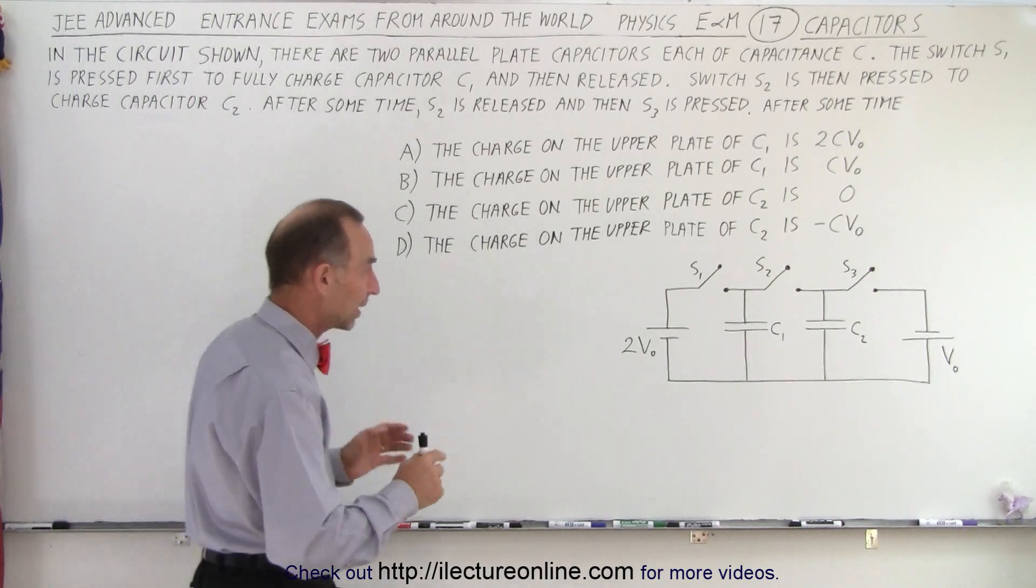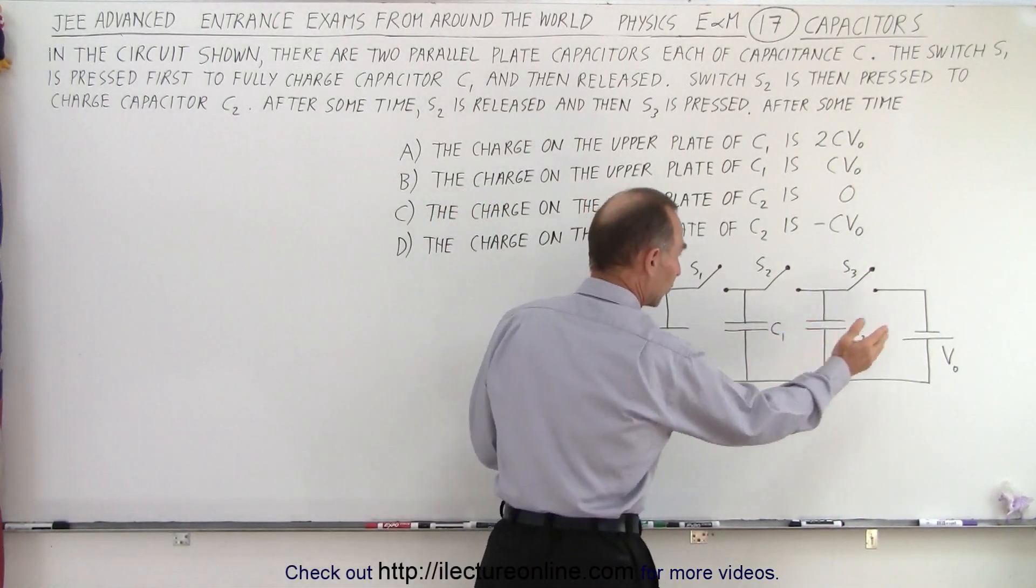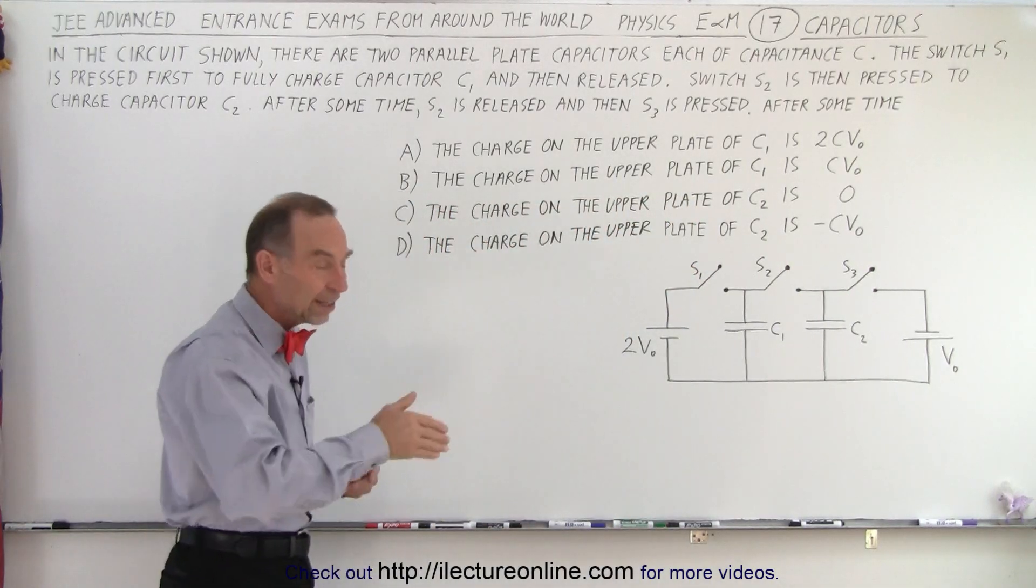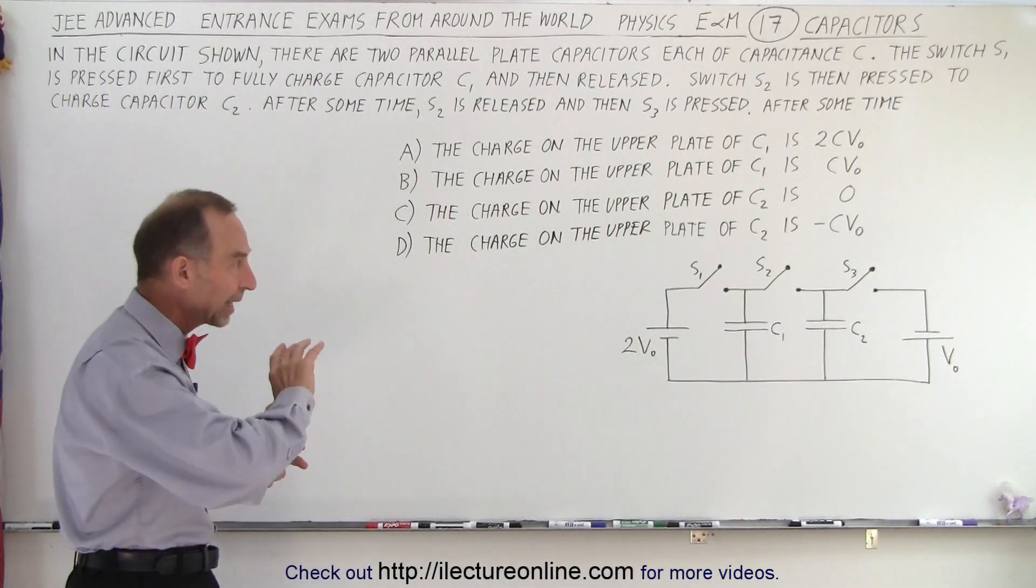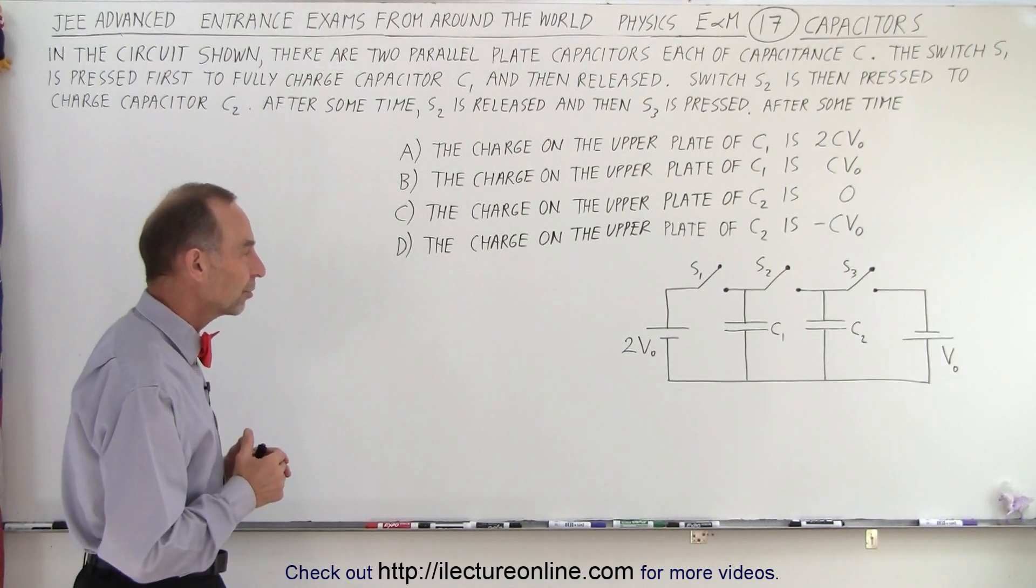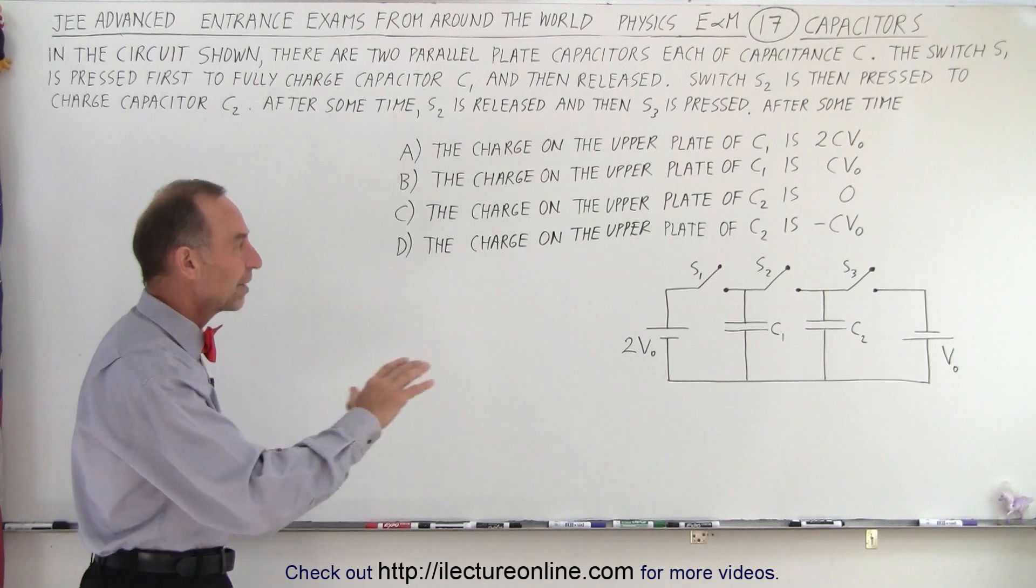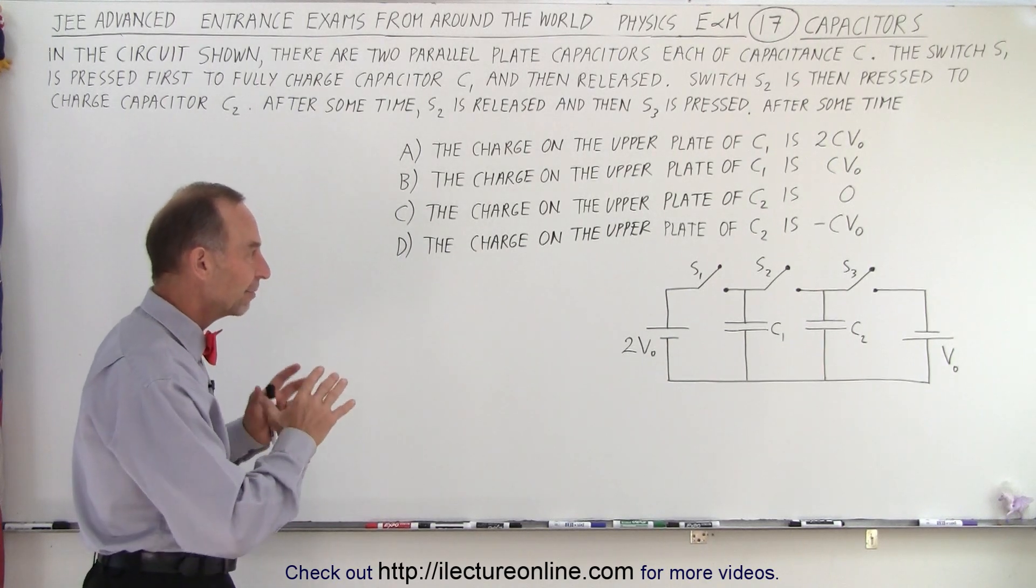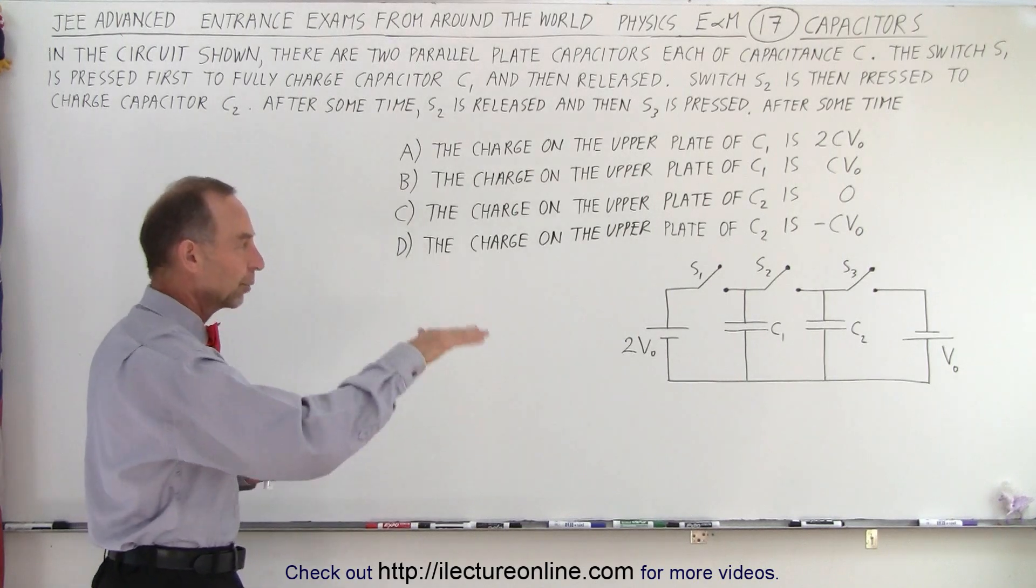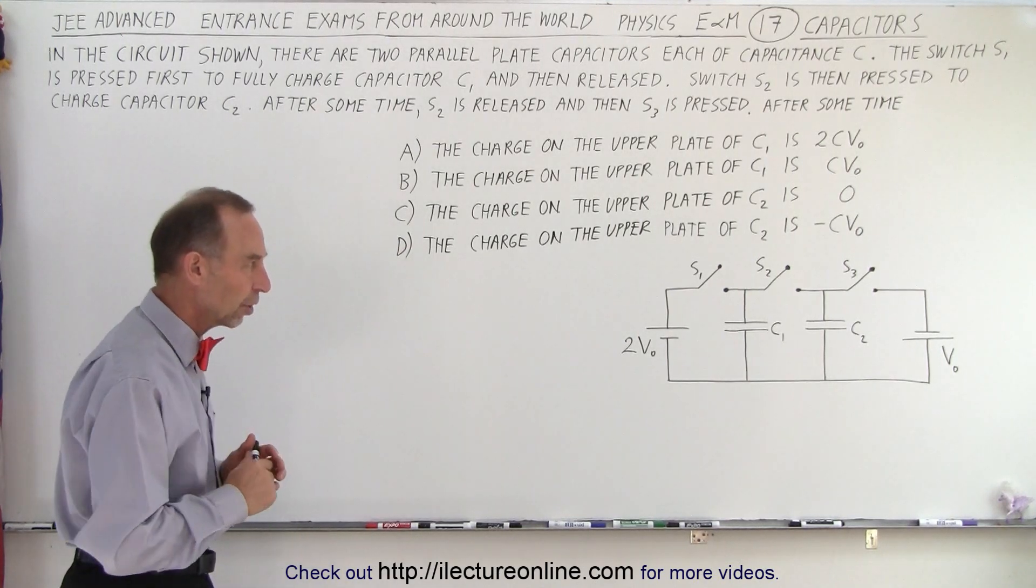So what they're doing here is we have a circuit with two capacitors, two batteries, three switches. We close each switch one at a time and leave it closed long enough for things to come to a final status or final situation so that there's no transient going on. We have a complete final situation each time we close the switch, then we let go, close the next switch, let go, close the third switch, let go.